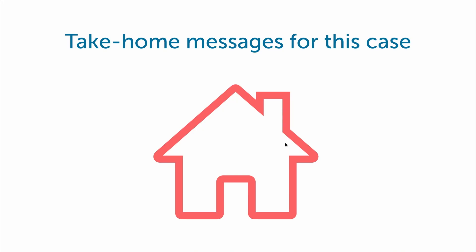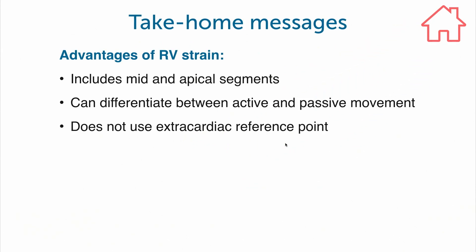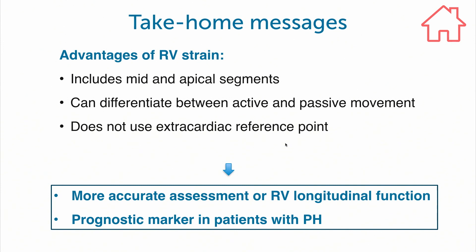The main advantages of RV strain that produced this different result are: first, RV strain analysis includes not only basal but also mid and apical segments; second, it can differentiate between passive and active motion of RV segments; third, it does not use an extra-cardiac reference point as TAPSE does. As a result, it provides a more accurate assessment of RV longitudinal function and is an important prognostic marker in patients with pulmonary hypertension.